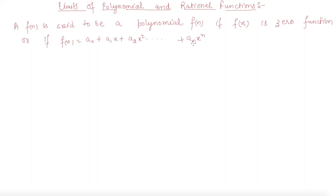This is the polynomial form. It is said to be a polynomial function where the aᵢ's are real numbers and aₙ is not equal to zero, and limit x tends to a of x should equal a.